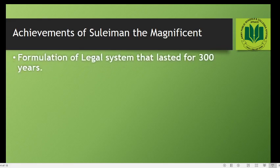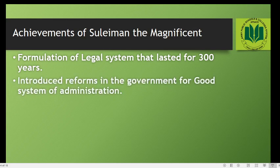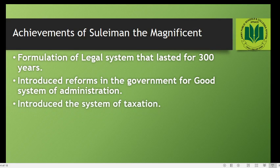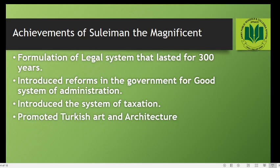Other achievements include the formulation of a legal system that lasted for 300 years. The overriding law of the Ottoman Empire was Sharia, and Suleiman also made additional laws to establish peace in the region. He was known as a just and fair ruler who always chose his subordinates on merit rather than social status. He also introduced reforms for good administration, set up a proper administrative structure, and introduced a system of taxation.